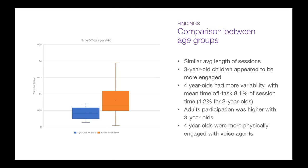In terms of age differences, we conducted fewer sessions with three-year-old children; however, the average length of sessions was very similar between the two age groups. One surprising finding was that three-year-old children appeared to be more engaged than four-year-olds. Four-year-old children had more variability throughout the sessions and spent more time off task, with a mean of 8.1% of session time, while it was 4.2% for three-year-olds. Adult facilitators were also more engaged with the three-year-old group, at a mean of 23% of session time versus 13% for four-year-olds.